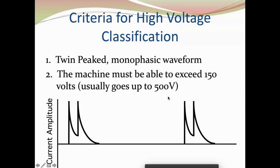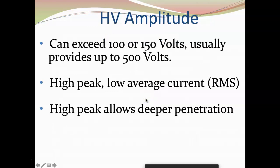It's twin-peaked and monophasic — you'll need to know that for the board of certification examination. As we progress, we know that high volt can get up to a relatively high amplitude — about 500 volts, give or take. This is the first device we're talking about that is capable of delivering greater than 100 to 150 volts during the electrical treatment. The other thing we know is that we have these high twin-peaked waves, but there's a low average current, and we'll talk about why the average current reduces.